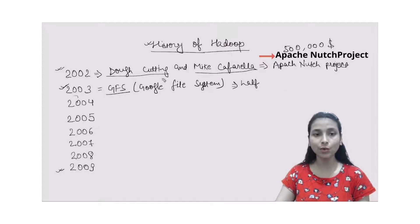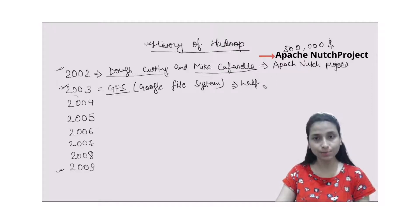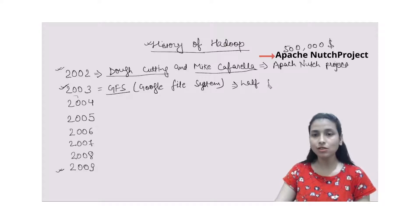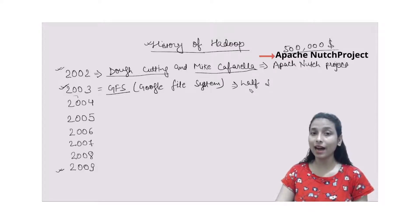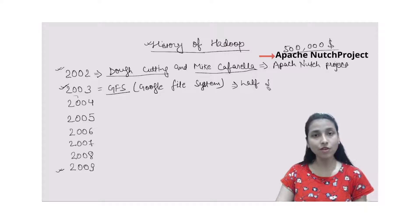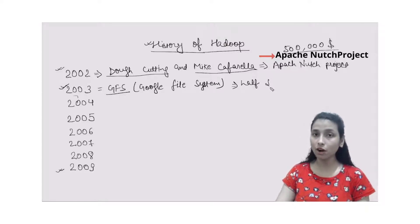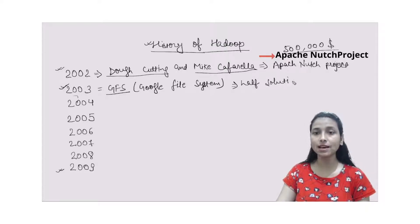That was Doug Cutting and Mike Cafarella's project. The problem they were facing was that of expense, and it got solved because they got the idea of storing large amounts of data during web crawling and web indexing. So the GFS paper proved to be a half solution for them.